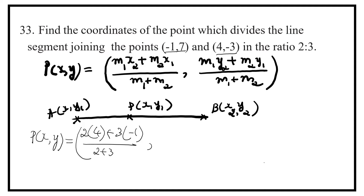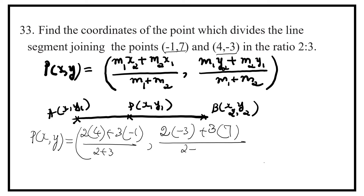This is the coordinate of x. For the y-coordinate: m1 is 2, y2 is minus 3, m2 is 3, y1 is 7, upon 2 plus 3.